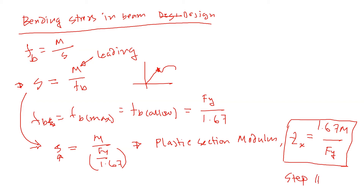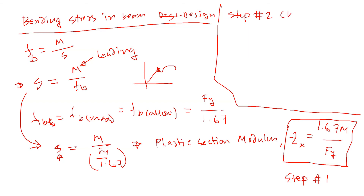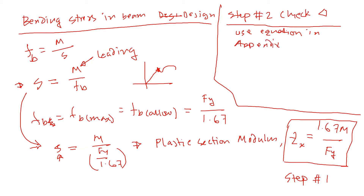Step number one in beam design: choose a beam based on the loading condition using the plastic section modulus Z. Step number two: check deflection. Use the equation from the appendix to calculate the deflection, and compare it to the allowable deflection given in the problem to verify you are not exceeding the limit.